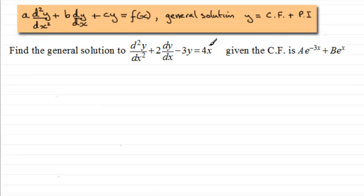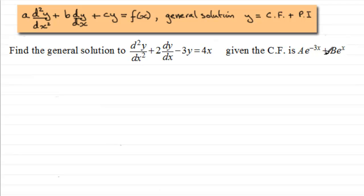When f of x is a linear function. The problem we have is: find the general solution to d²y/dx² plus two times dy/dx minus 3y equals 4x. We're given that the complementary function is ae to the power minus 3x plus be to the power x.